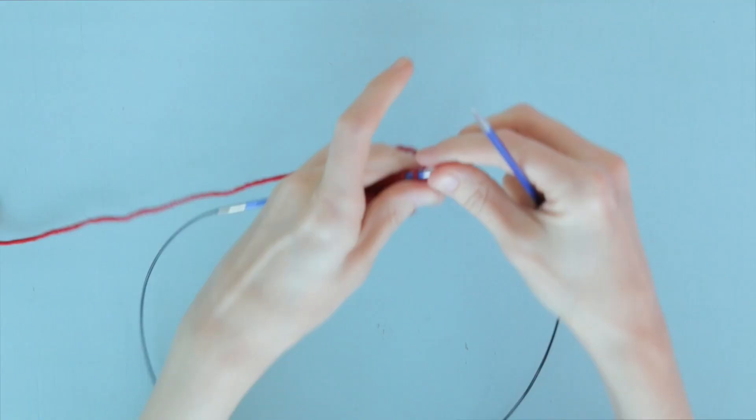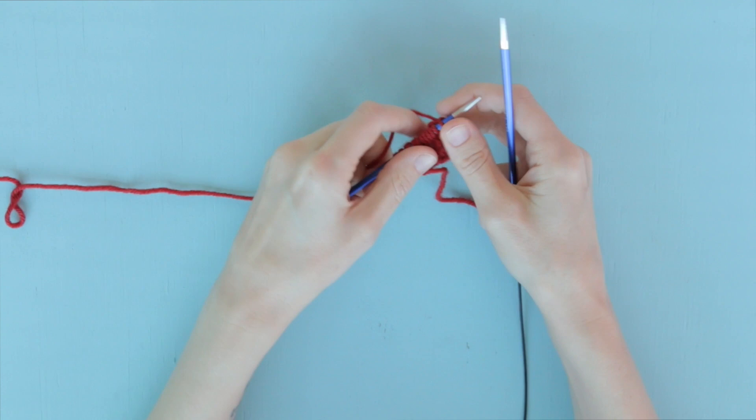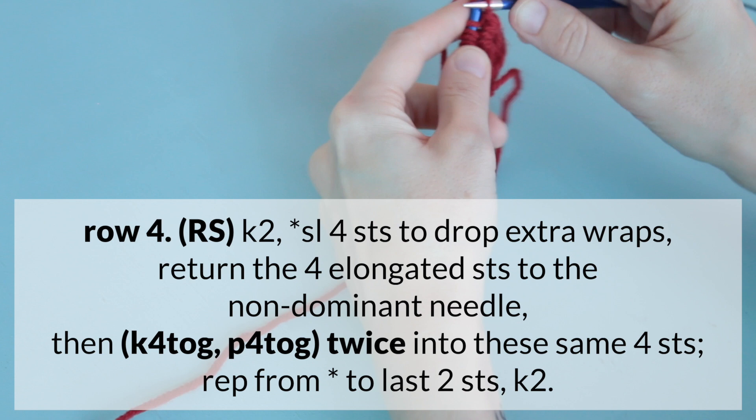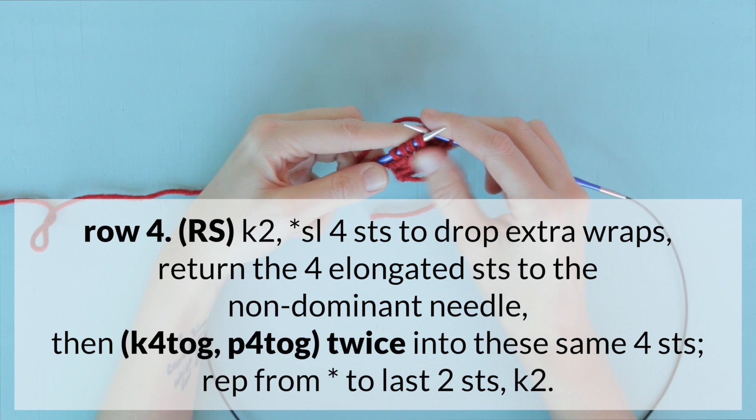Turning to the right side of our work, we are going to start out row four with just knitting two stitches. Just a good old K2. And now for all those stitches in our rows with those elongated loops, we do the action that you'll remember from row two. So slip the next four, dropping the excess loop to the right needle.